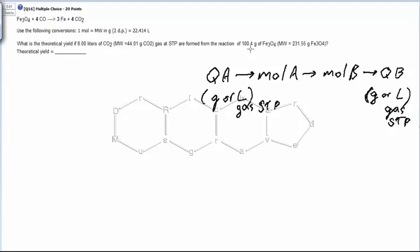We can figure out exactly how much we should have gotten using dimensional analysis. We're going to start with 100.4 grams of Fe3O4 and figure out the number of moles of Fe3O4, the number of moles of CO2, and the unit we're after on the CO2 is also given by the problem.